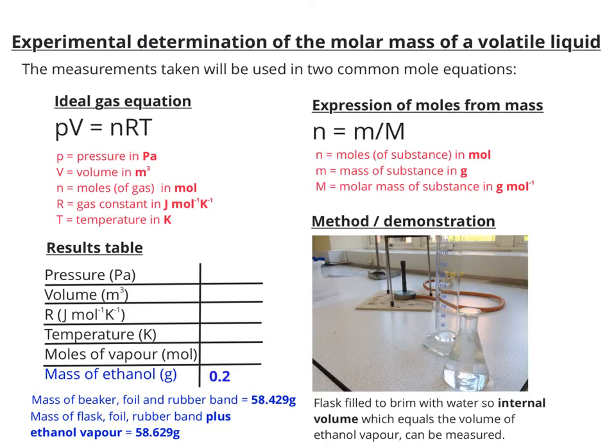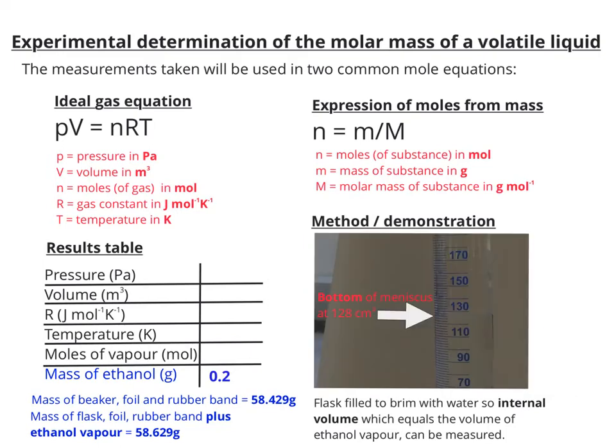We now want to know what the internal volume of the flask was, in other words, the volume that was occupied by the ethanol vapor during the heating process. This is easily done. You just fill the flask to the brim with water like you can see, and pour it into a measuring cylinder. When I did that, I ended up with 128 cm³ measuring the bottom of the meniscus. That enables me to put in the volume in meters cubed by taking 128 cm³ and dividing it by a million to convert it into meters cubed.